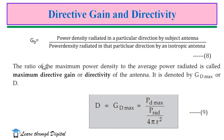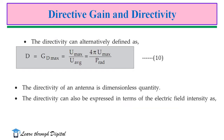Maximum directive gain is otherwise called directivity. The antenna gain is directly associated with the directivity of an antenna. The ratio of maximum power density to the average power radiated is called maximum directive gain, represented as D. D = Gd_max = Pd_max / P_average. Directivity can alternatively be defined as D = Gd_max = U_max / U_average = 4π U_max / P_rad, where U_max is the maximum radiation intensity. The directivity of an antenna is a dimensionless quantity.